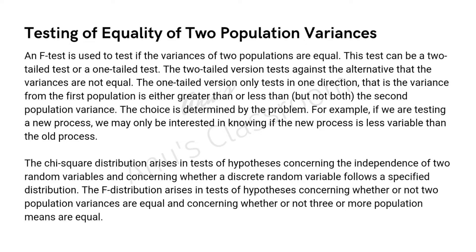The chi-squared distribution arises in tests of hypothesis which concern the independence of two random variables and whether a discrete random variable follows a specified distribution. The F-distribution arises in tests of hypothesis concerning whether or not two population variances are equal and whether or not three or more population means are equal.